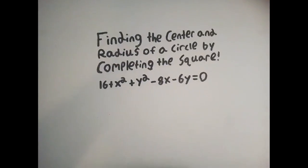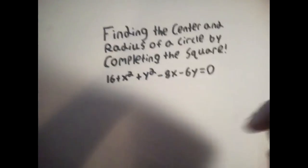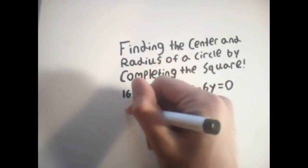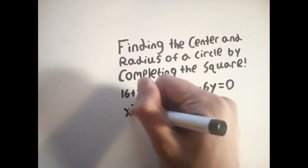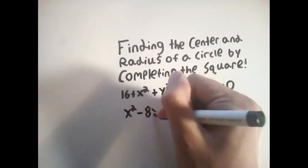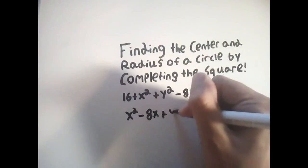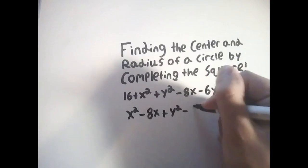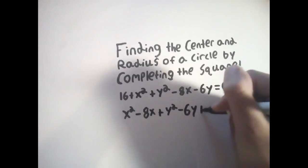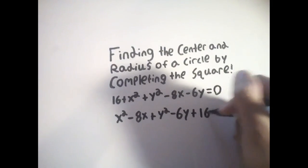Alright, so say we have the equation right here, and we're tasked with completing the square and then identifying the center and radius. While it may not look normal now, we can fix it by completing the square. Completing the square is just a fancy way of saying that we're going to convert this equation into a simpler equation in the form of h and k so that we can find the radius and center of the circle easily.